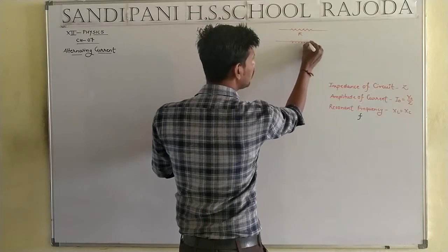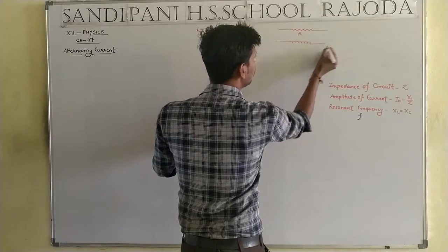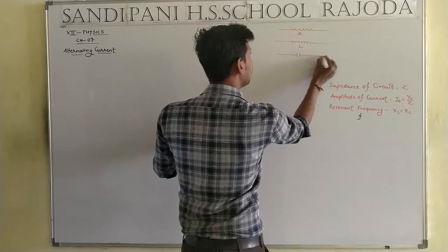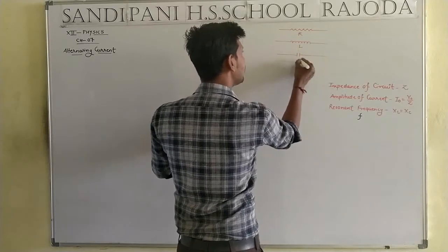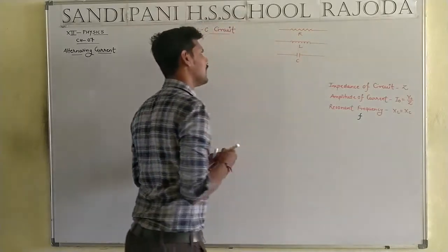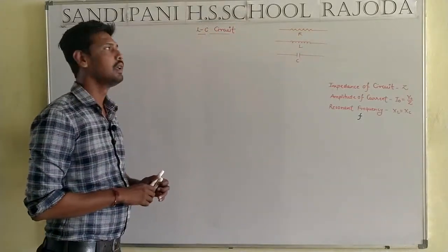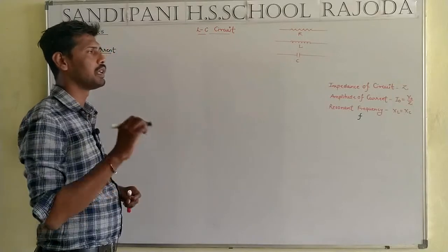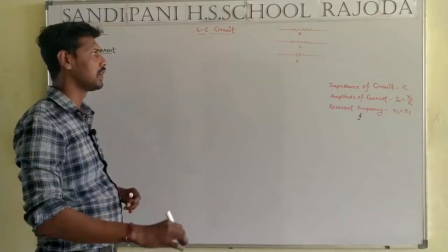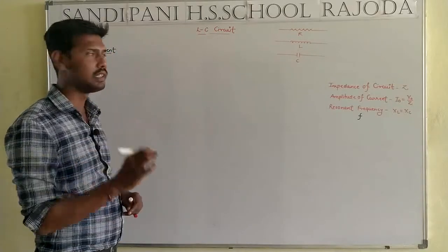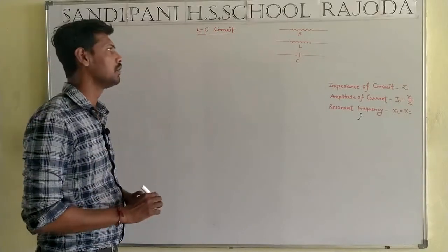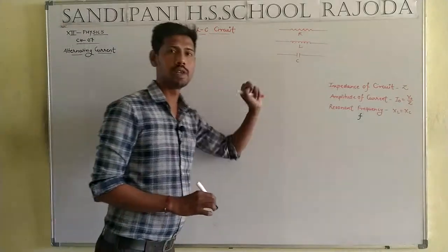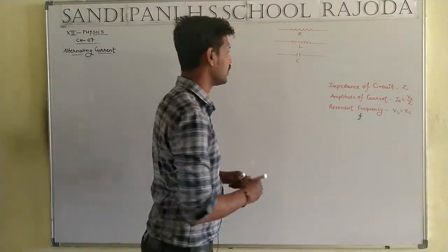If we see this diagram: this is an inductor and this is a capacitor. Capital R means resistance, capital L means inductor, and capital C means capacitor. These are the three components we deal with.